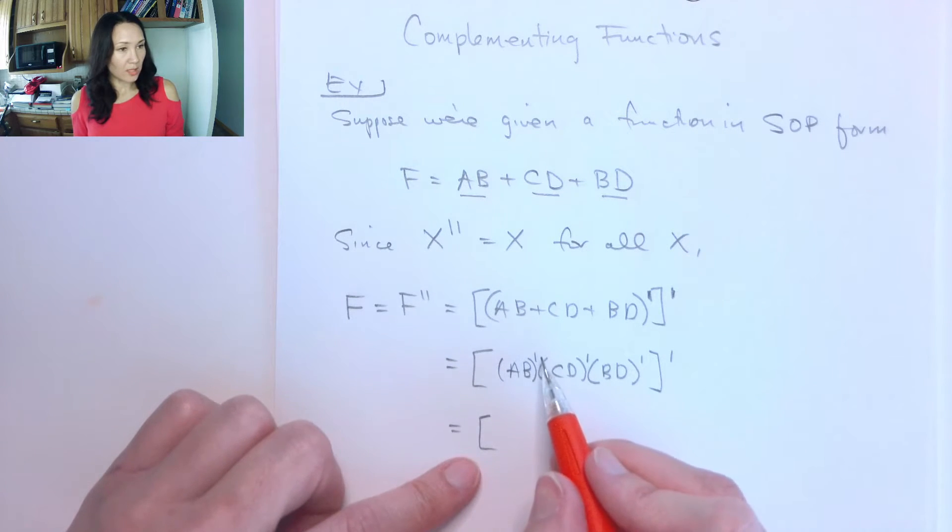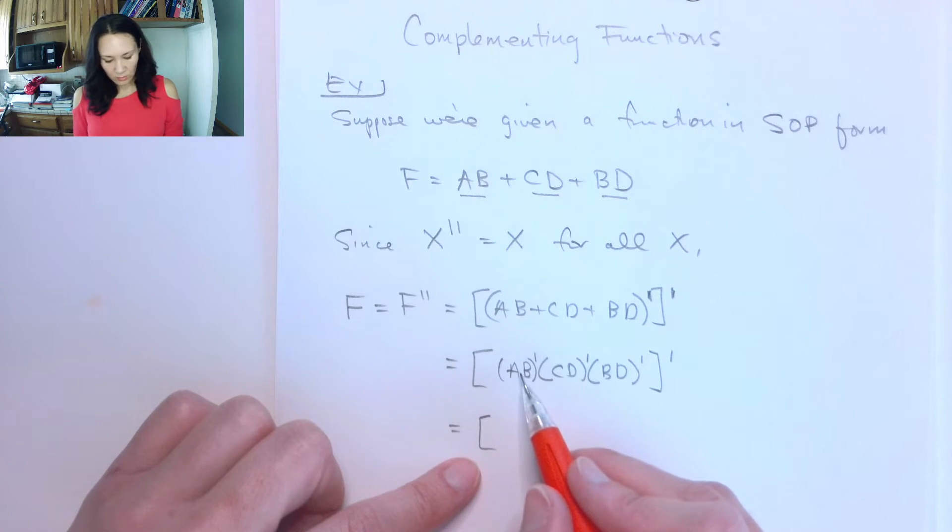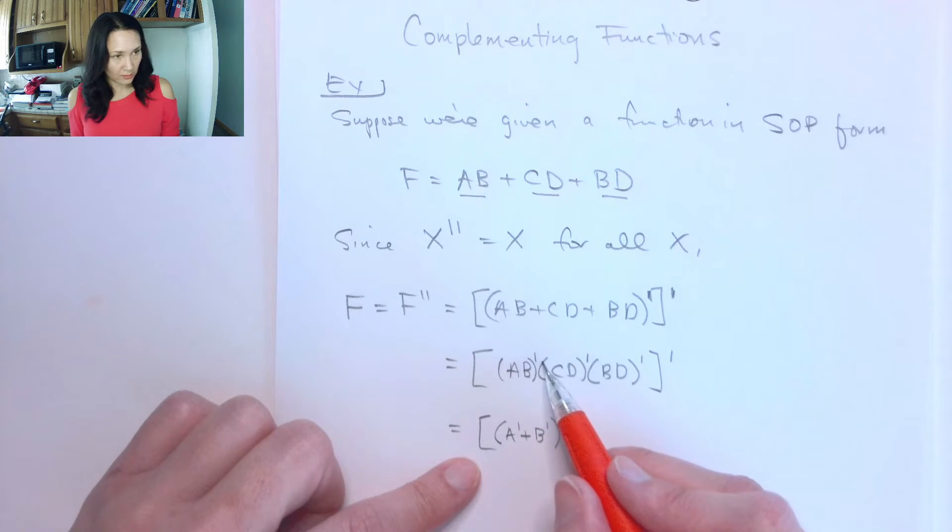Now if I want to apply De Morgan's to each one of these terms that have their own complement on the outside, if I distribute the complement to the A and B, this is going to give me A not, change this AND to an OR, give the B its own NOT. So that's the way De Morgan's works. Distribute the complement to the A and B, change the AND to an OR.